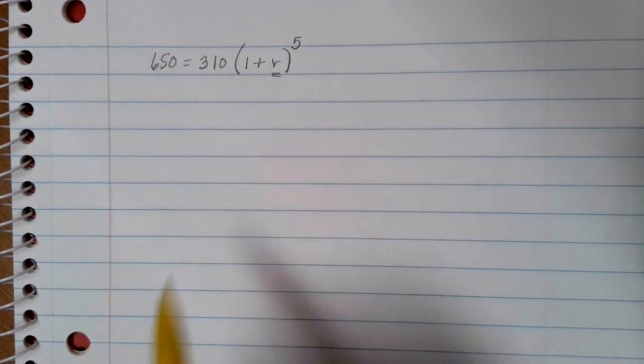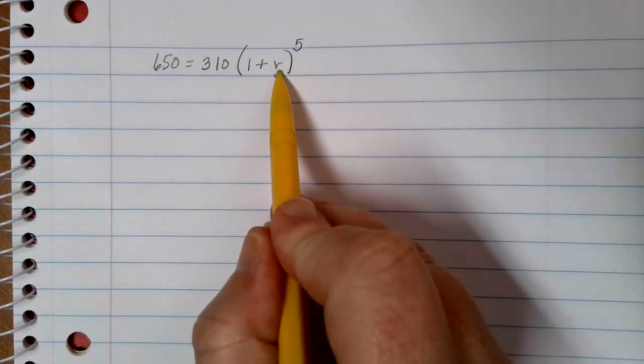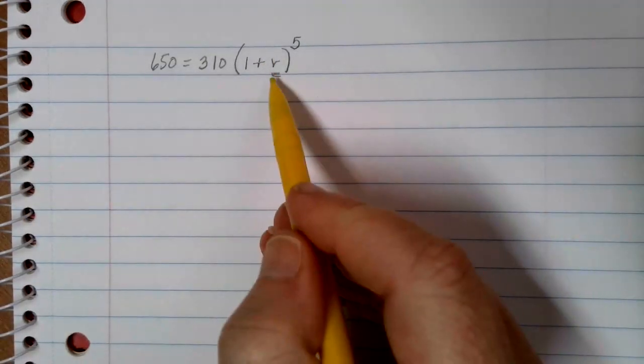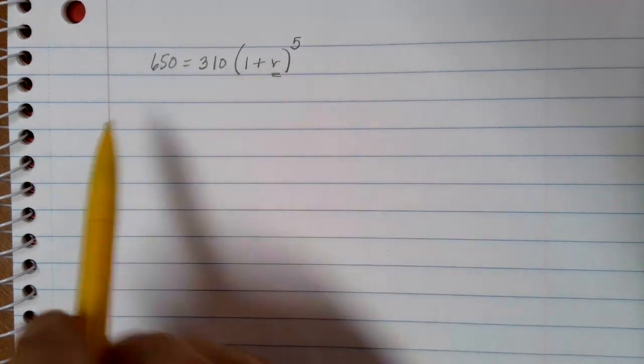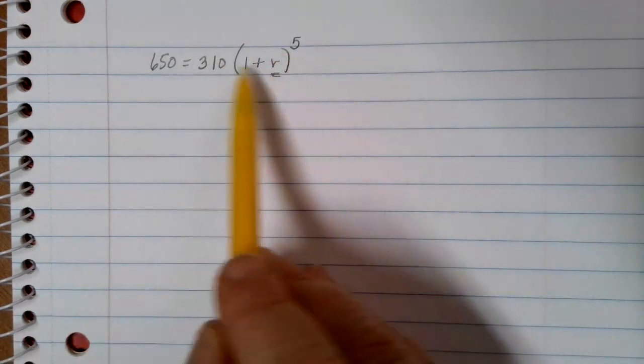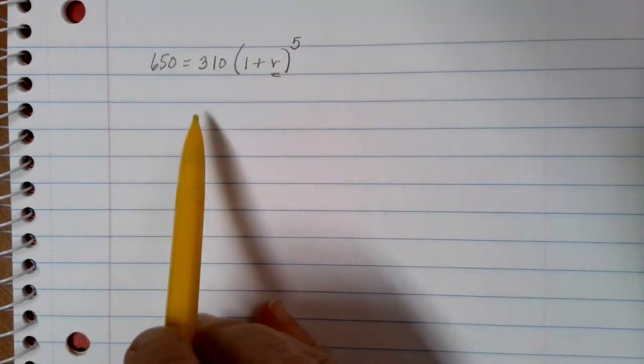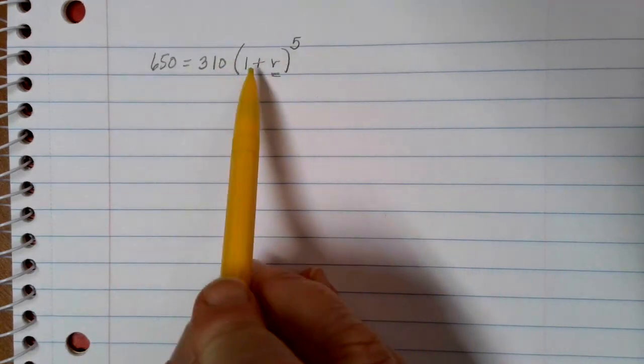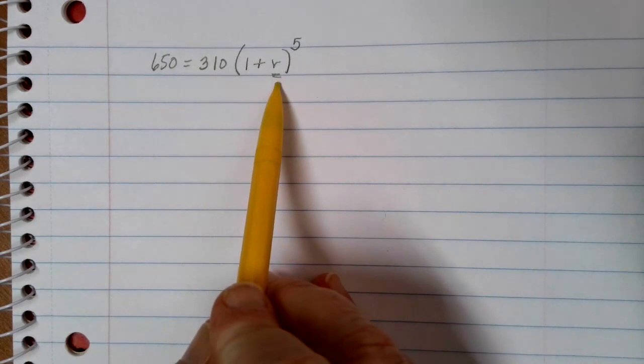Remember that your goal when you're trying to solve an equation is you want the letter to be by itself so that you can actually do the calculations and see the value that you want. If you look at the problem right now, I have three different numbers on the same side of the equation as the R. I have a 310, a 5, and a 1, and I'm going to need to get rid of all of these in order to get the R by itself.